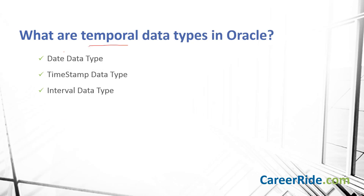What are temporal data types in Oracle? Temporal data types are used to store date, time, and time interval information. Oracle provides three temporal data types: DATE, TIMESTAMP, and INTERVAL. The DATE data type stores different formats of dates. The TIMESTAMP data type stores different formats of timestamps. And the INTERVAL data type holds the interval between dates and times.